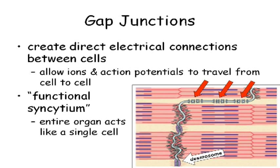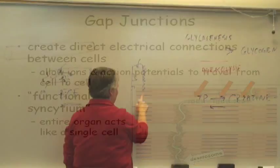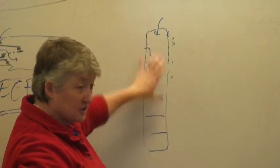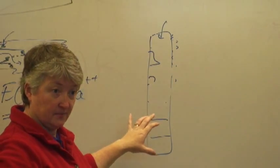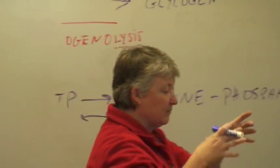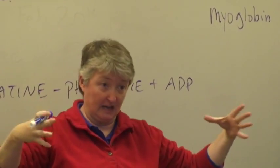Everybody's probably heard of RSV — respiratory syncytial virus. What does 'syncytial' mean? In RSV, the virus infects respiratory epithelial cells and actually fuses them together, causing them to lose their cilia. That's called a syncytium — basically a bunch of cells that fuse together into one giant cell.